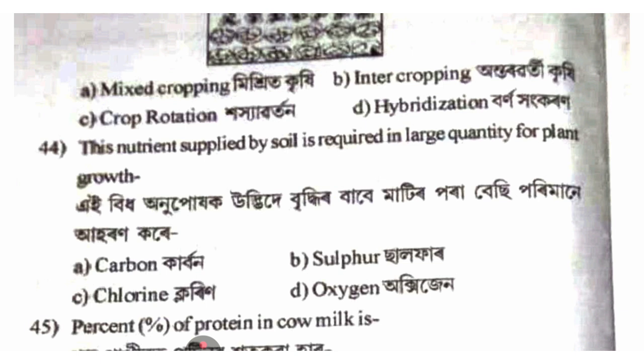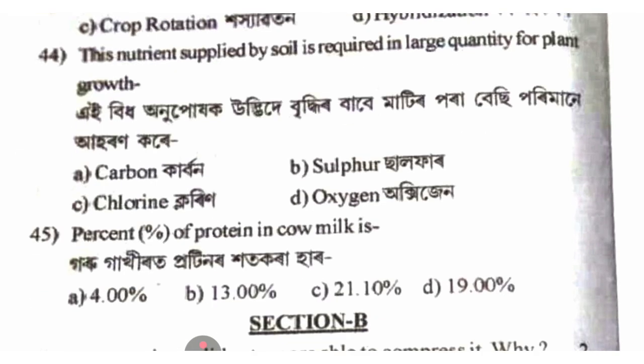This nutrient supplied by soil is required in large quantities for plant growth. The answer is sulfur, option B.